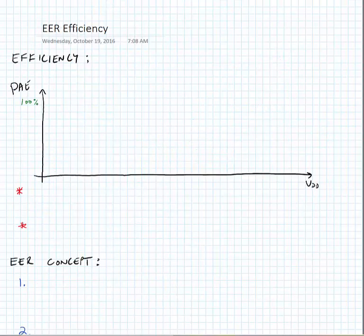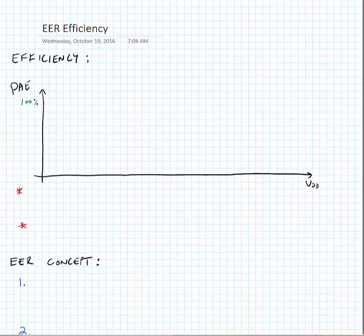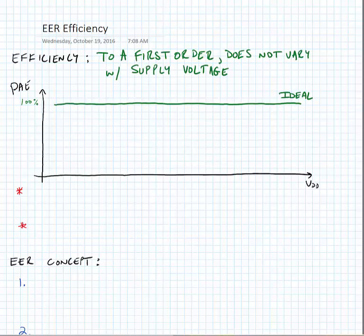Now this is important because the energy efficiency in a power amplifier, the PA's efficiency to a first order, does not vary with the supply voltage. In reality the efficiency does vary with supply voltage. Here I've drawn an ideal characteristic of the efficiency of a PA with respect to the supply voltage, but in reality it is going to roll off at some point.